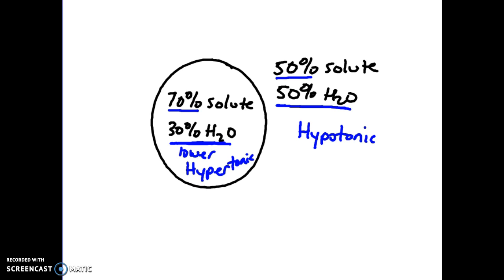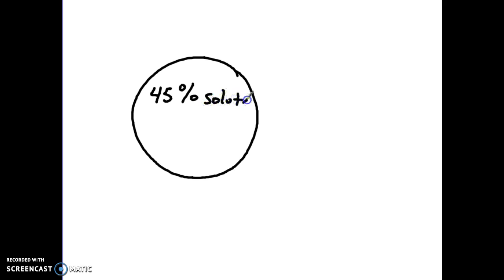Let's do another example. Let's see if we're understanding this. Okay, so let's do 45% solute. Let's make the outside 80% solute. That's even enough information to answer my question. But in the beginning, you might want to look at, all right, well, this must then mean 55% water. This must mean 20% water.